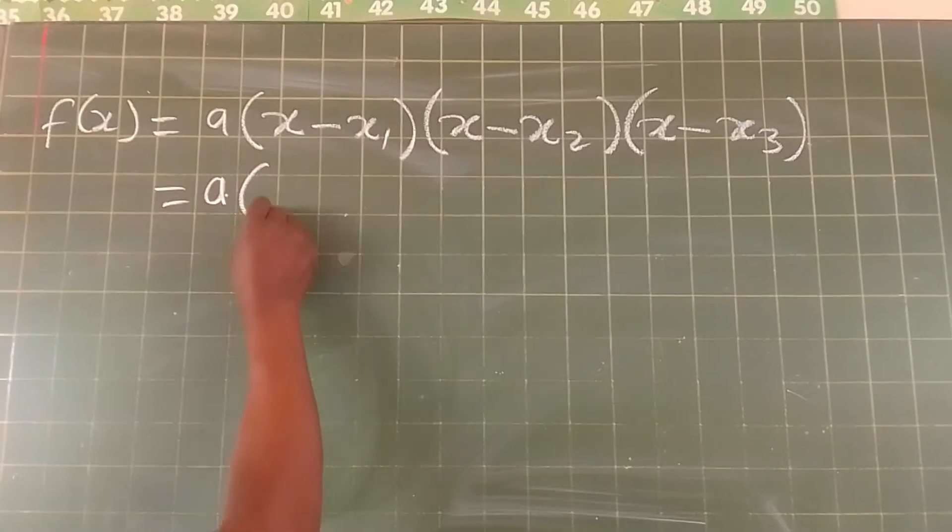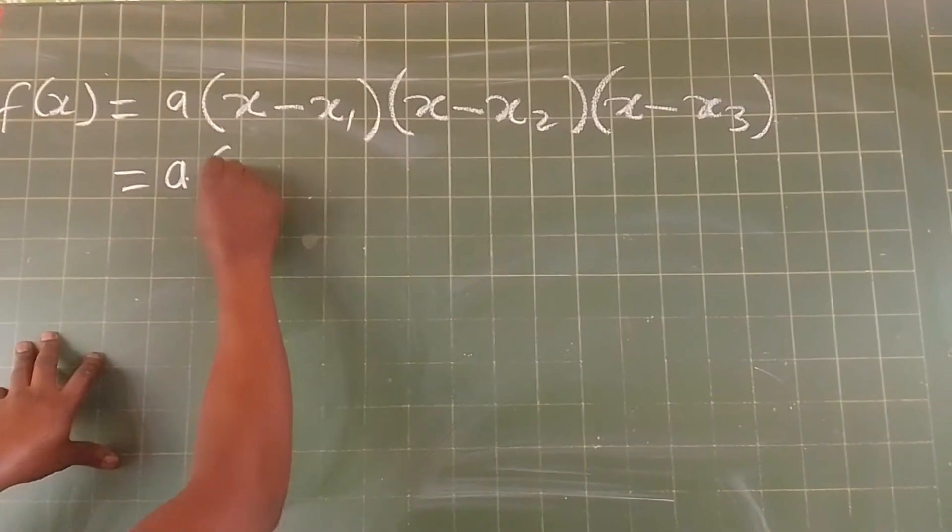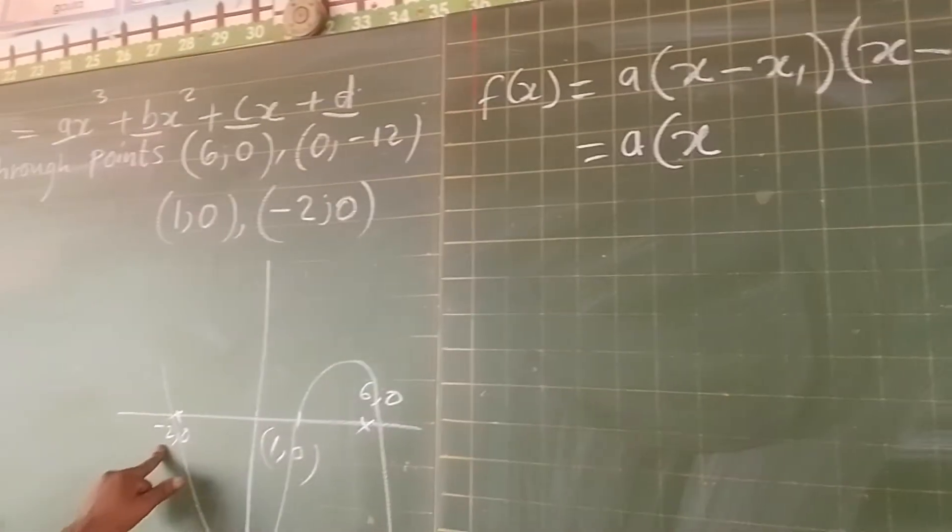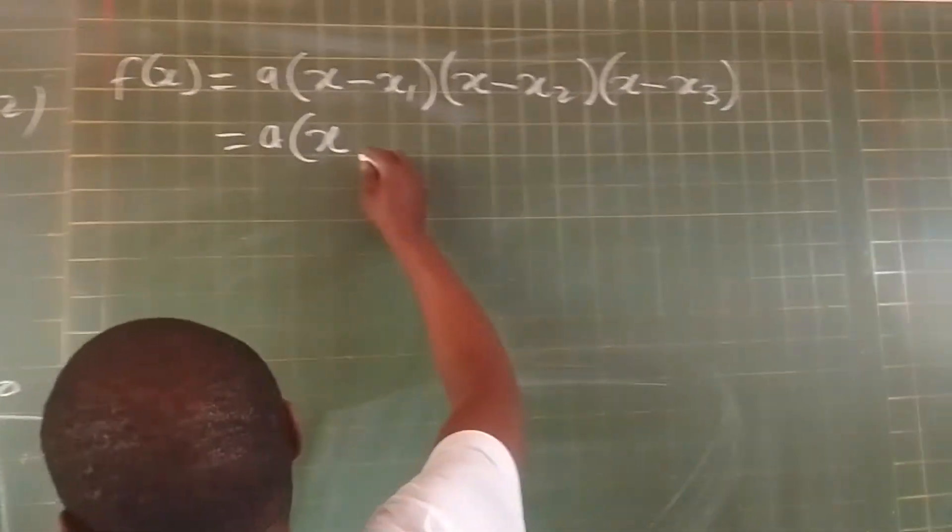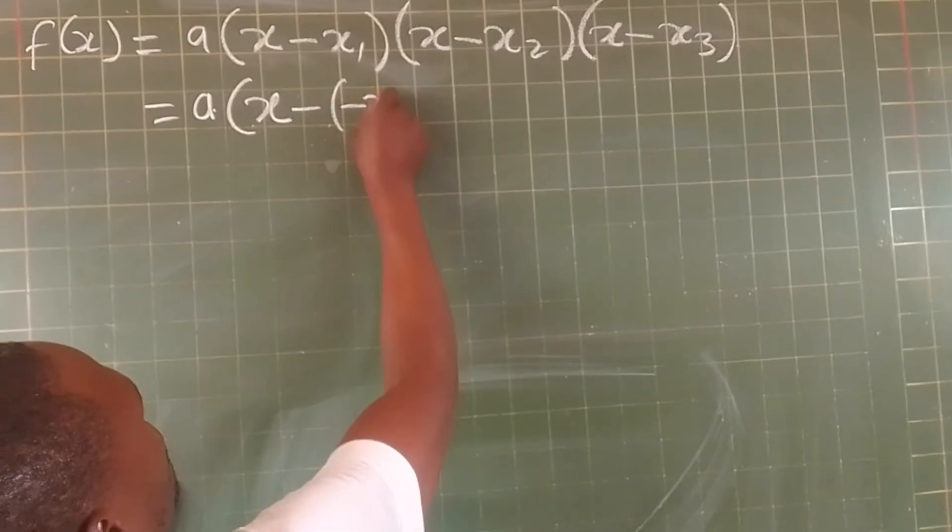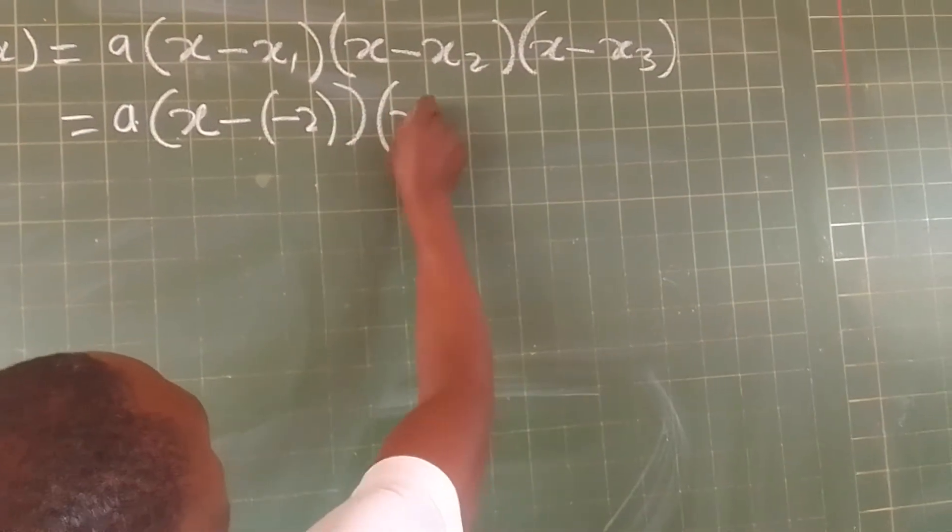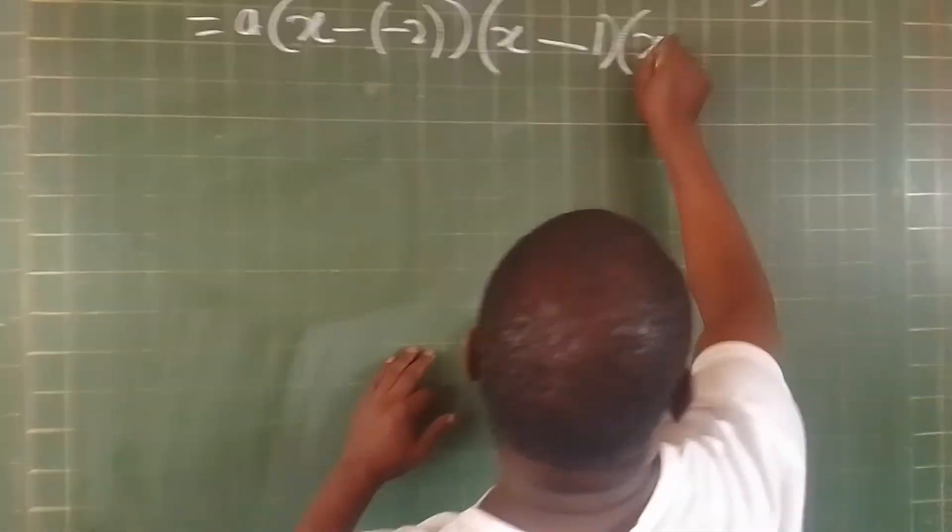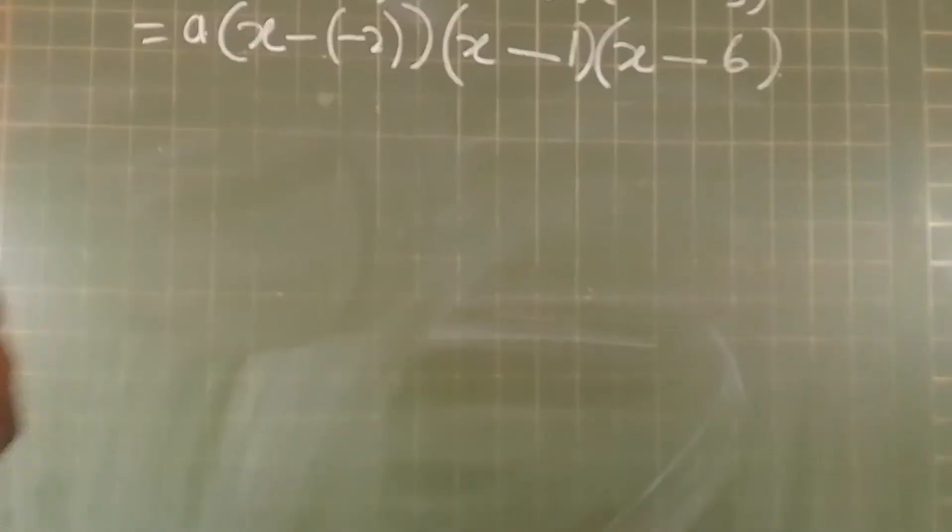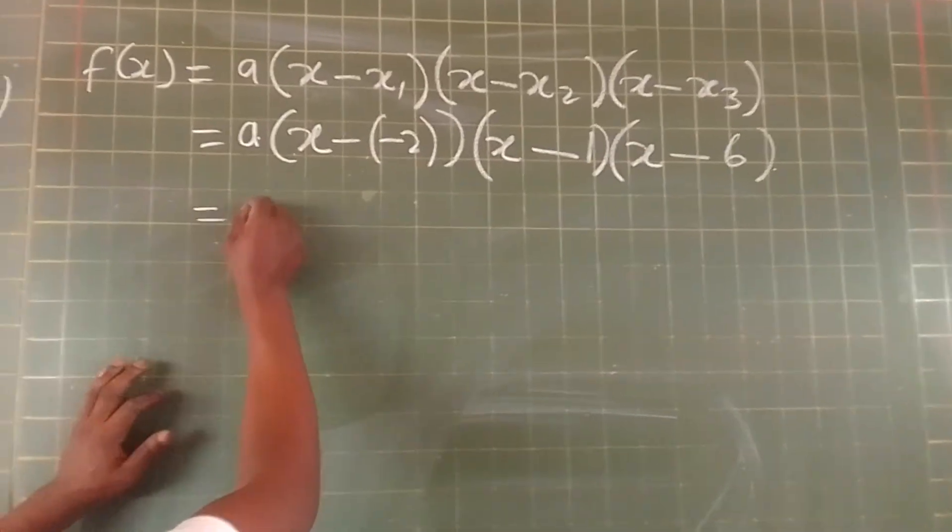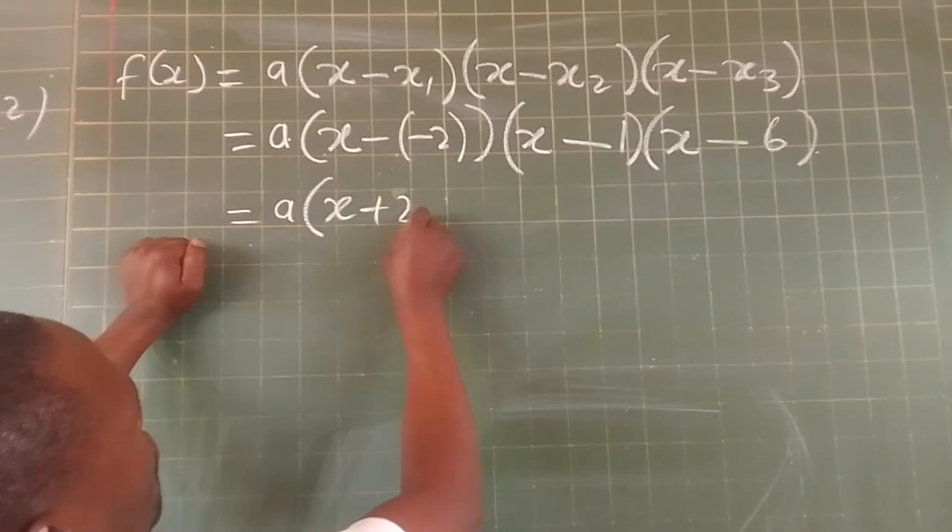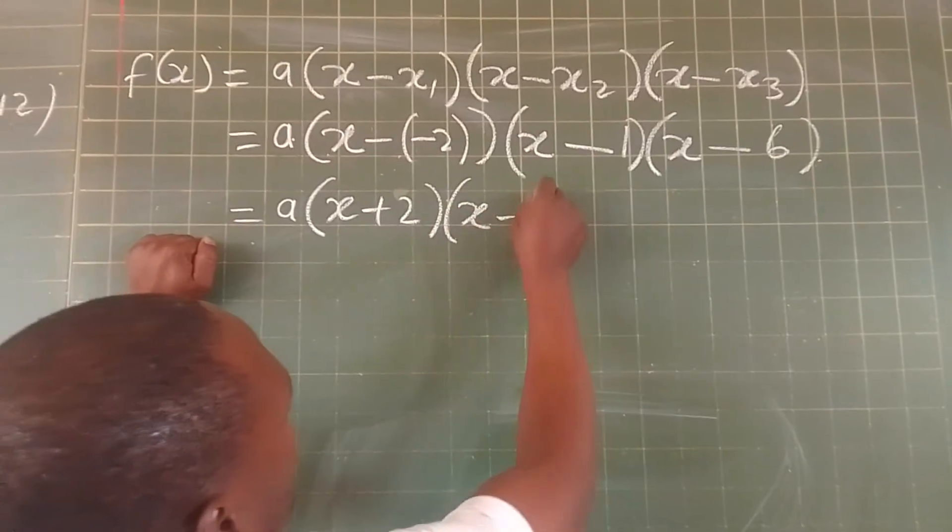Now, we substitute the value of x. It's a times (x - (-2))(x - 1)(x - 6), which equals a(x + 2)(x - 1)(x - 6).